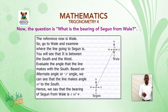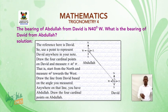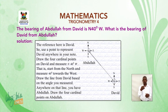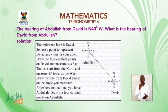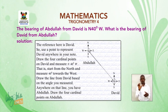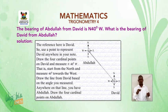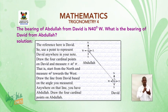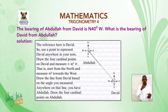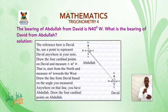Second question: the bearing of Abdullah from David is 40 degrees west of north. What is the bearing of David from Abdullah? The same process applies. The reference here is David. Use a point to represent David anywhere in your notes. Draw the four cardinal points on David and measure 40 degrees west of north — that is, start from the north and measure 40 degrees towards the west. Draw the line from David based on that angle of 40 degrees.